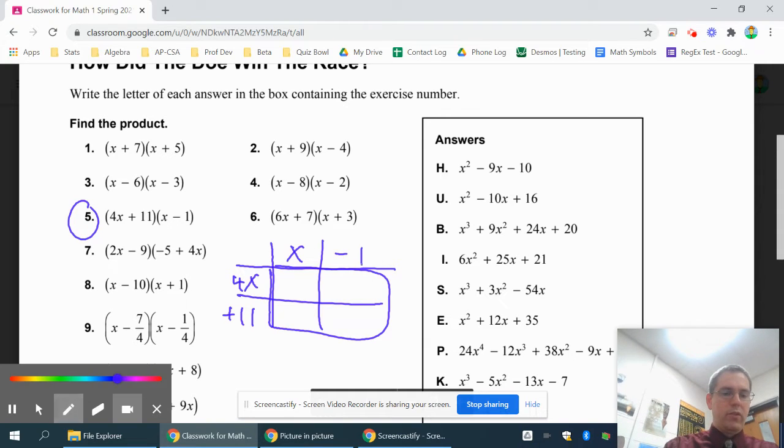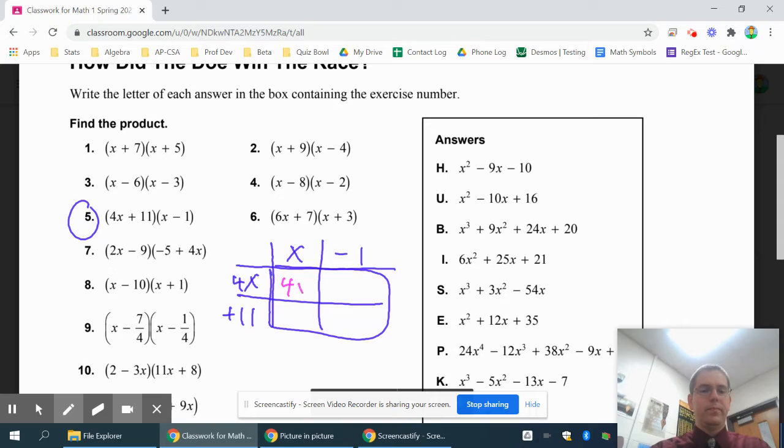I'm going to switch colors so this stands out a little bit better. And now what I just do is multiply. So 4x times x is 4x squared, and then 4x times negative 1 is negative 4x. 11 times x is 11x, and then 11 times negative 1 is negative 11.